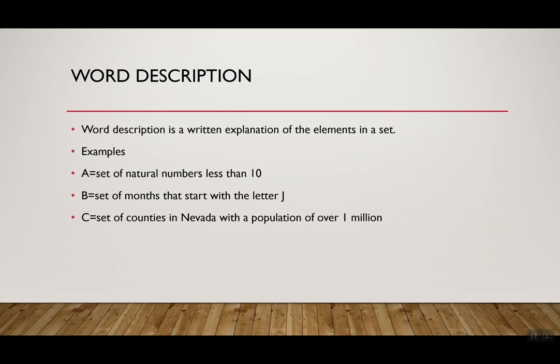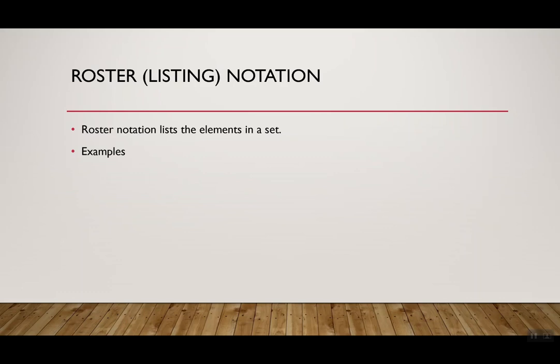So I'm going to take these three sets again, A, B, and C, and I'm going to change the notation to the roster or listing notation. Roster notation just lists the elements in a set. So I'm going to tell you exactly what they are and I'm going to write them out. So I'm going to go back to A and this time it's {1, 2, 3, 4, 5, 6, 7, 8, 9}. So those were the natural numbers less than 10. This time I wrote them out. B, remember last time I said it was a set of months in a year that started with the letter J, but this time I wrote them out. I listed: January, June, July. And then C, I said was the counties in Nevada that had a population of over a million. But this time I'm just writing it out that it's Clark County. There's only one.